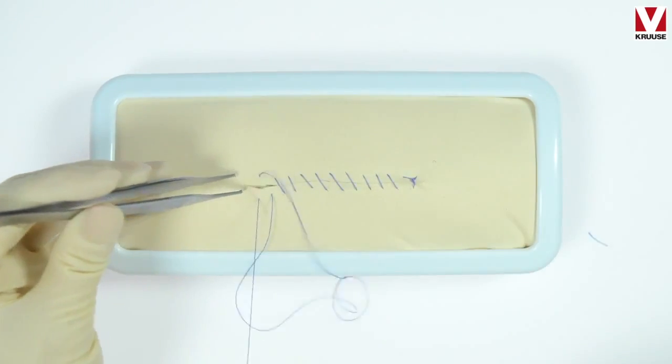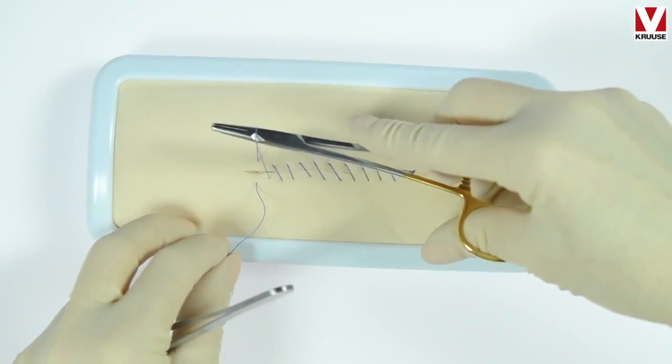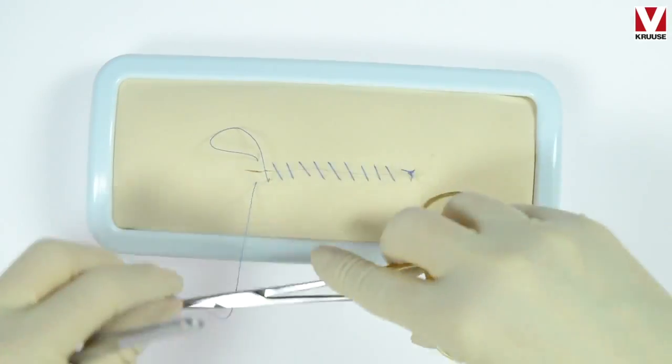Make a loop with the suture and use the loop to tighten the continuous pattern.